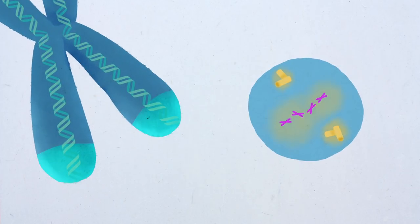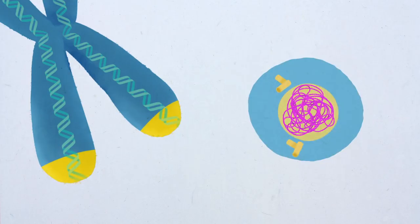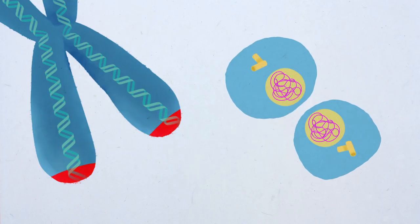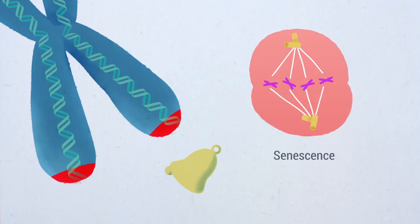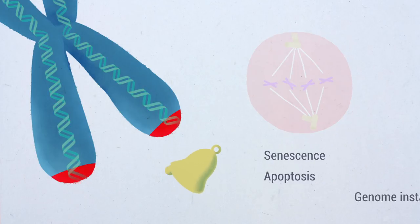Due to inherently incomplete genome replication, telomeres are progressively shortened in each cell cycle. When telomeres reach a critically short length, this triggers activation of a persistent DNA damage response resulting in cell division arrest, cell death, or genome instability.